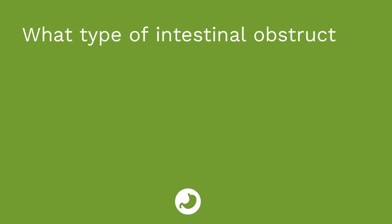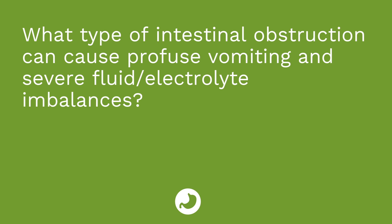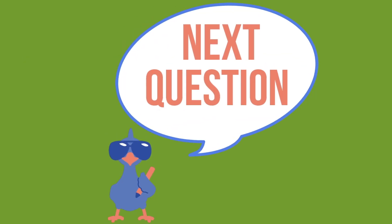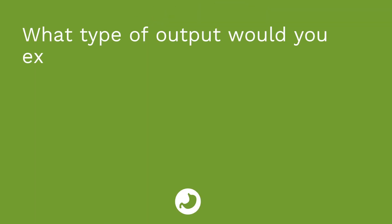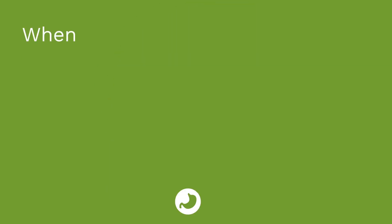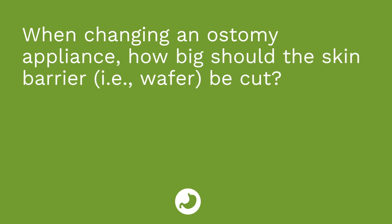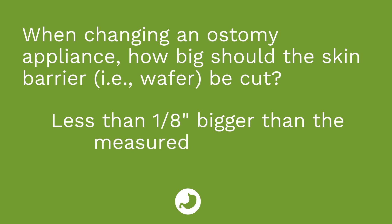It's time for a quiz. Question one: what type of intestinal obstruction can cause profuse vomiting and severe fluid and electrolyte imbalances? The answer is a small bowel obstruction. Question two: what type of output would you expect from an ileostomy? The answer is loose and watery output. Question three: when changing an ostomy appliance, how big should the skin barrier or wafer be cut? The answer is less than one-eighth of an inch bigger than the stoma size.